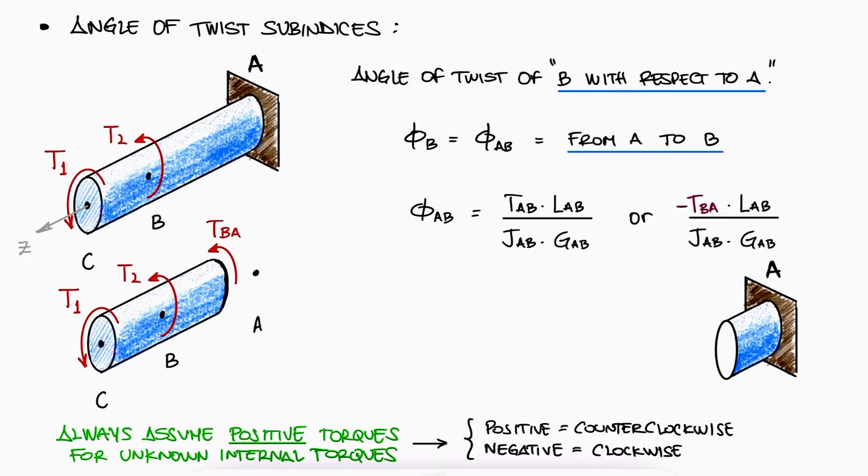The reason to always assume positive internal torques is because it's not always obviously clear that the internal torque is either positive or negative, like it is in this example. So for consistency, always assume positive, and the sign that you get when solving for its value will tell you if the torque, and of course, most importantly, the angle of twist is clockwise or counterclockwise.